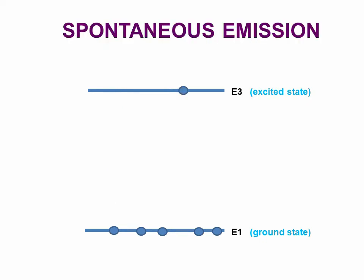Normally, the atoms in the excited state will not stay there for a long time. So it comes to ground state by two methods. The first one is spontaneous emission and another one is stimulated emission. Now, let us see what is spontaneous emission.